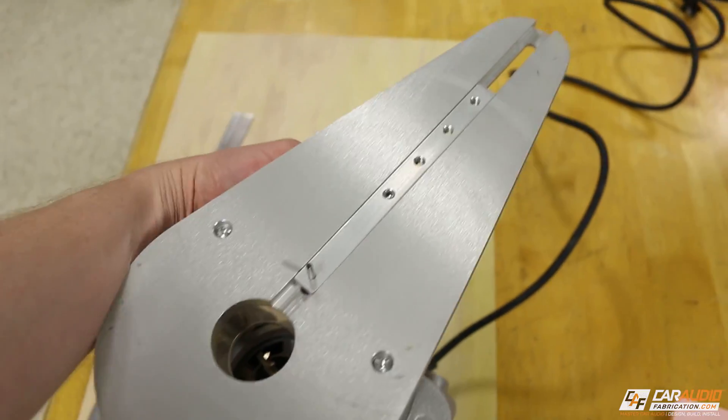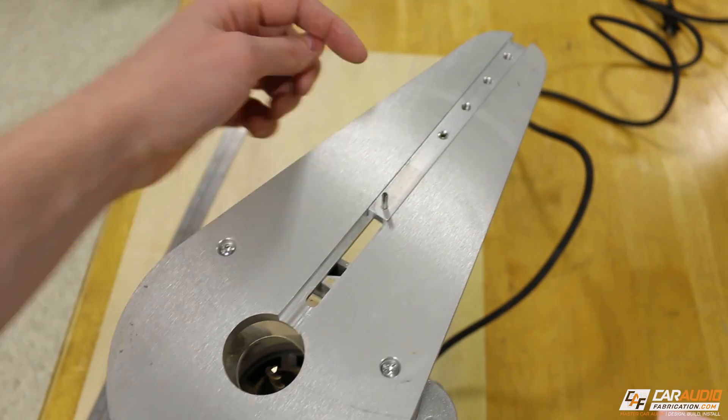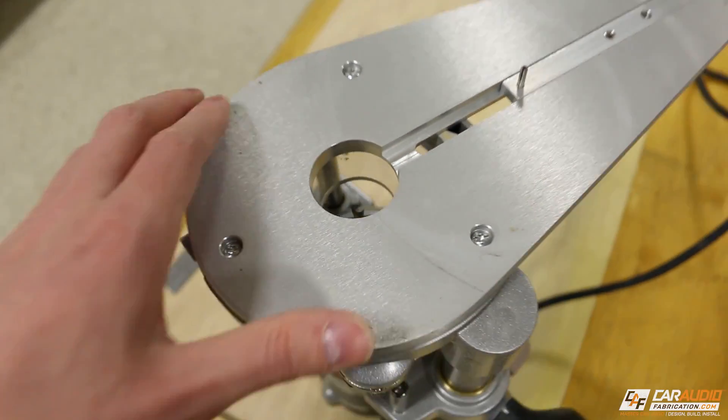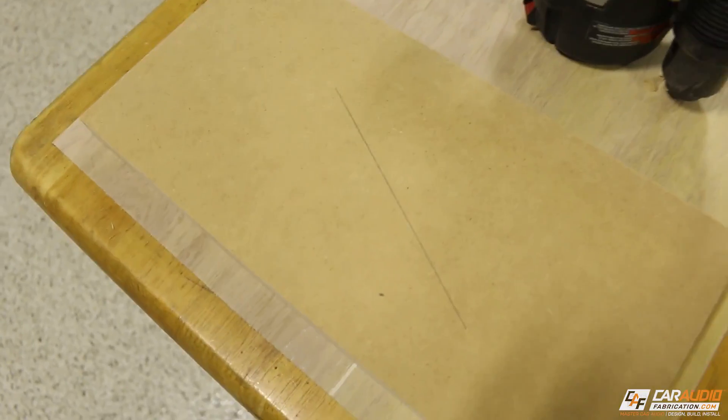And then the setup I've got going on here with my plunge router, which will actually plunge down into the work piece, I've got this on it. This is the Mobile Solutions Perfect Circle, which allows us to adjust to any circle size using that as a center axis. And then this is going to cut.